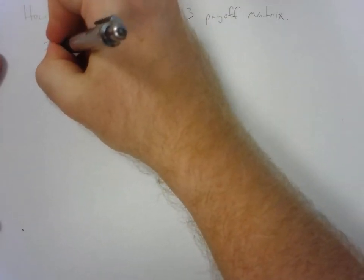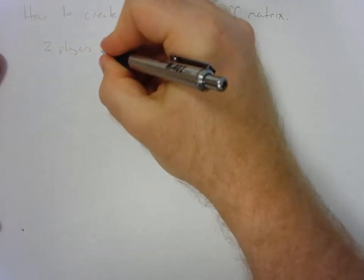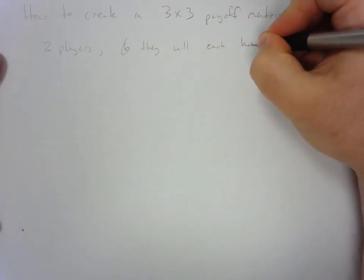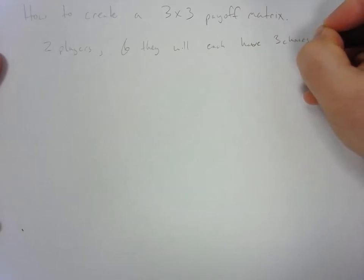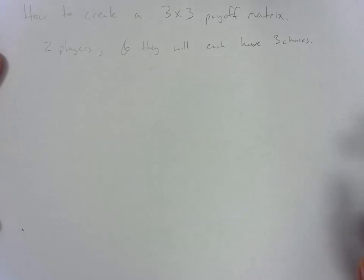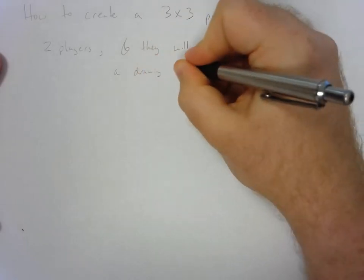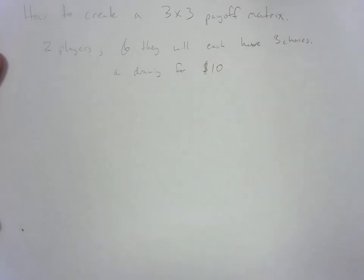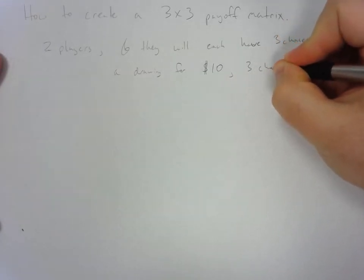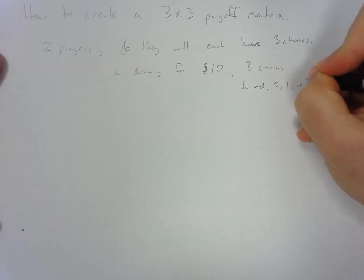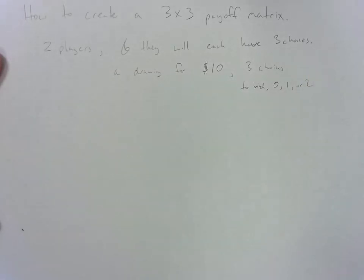What we'll do is set up the scenario. Imagine they're going to enter a drawing for $10 and basically they have to bid to win that $10. Imagine that three choices are to bid 0, 1, or $2. Whoever bids the highest wins. If they both bid the same amount then it will be a tie and they'll split the pot.